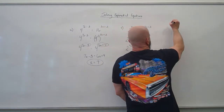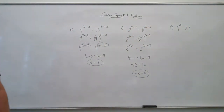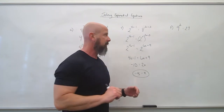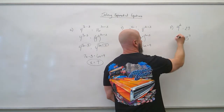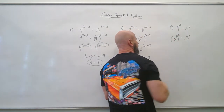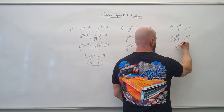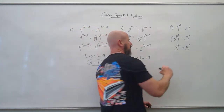Let's look at 9 to the 2x equals 27. The bases 9 and 27 are definitely not the same, so I want to get them to the same base. This time I'll go to 3s on both sides: 27 is 3 cubed, and 9 is 3 squared. So 3 squared to the 2x — power to a power, we multiply — gives 3 to the 4x equals 3 cubed. Now with like bases, 4x equals 3.